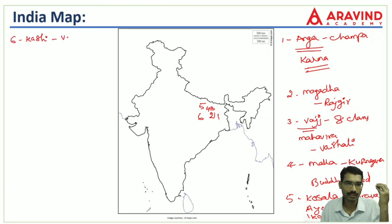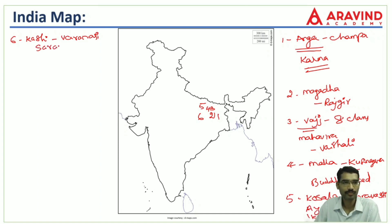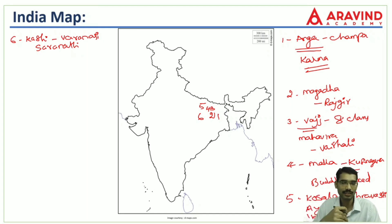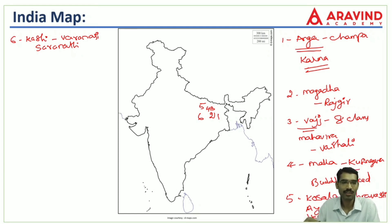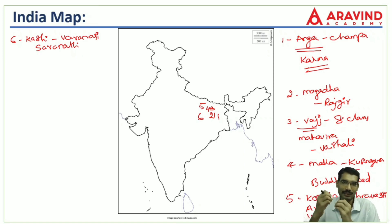The next neighbor is Kashi. Varanasi is located within the Kashi Mahajanapada and is its capital city. Varanasi is important because it is where Buddha gave his first sermon at Sarnath, which is located near Varanasi. Because of Mahavira's and Buddha's associations with these kingdoms, many Mahajanapadas gained historical prominence and are important from an examination perspective.